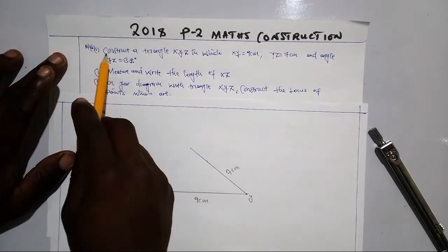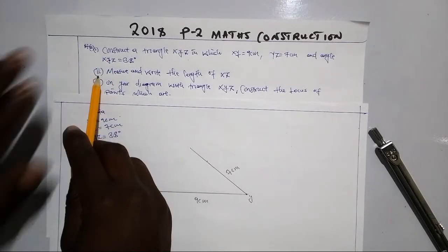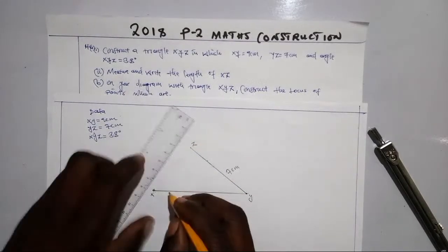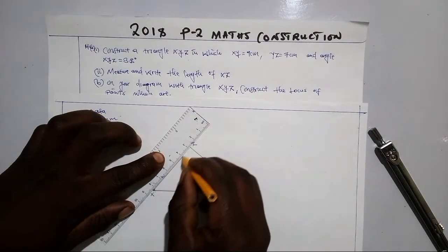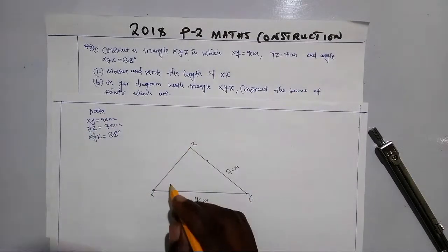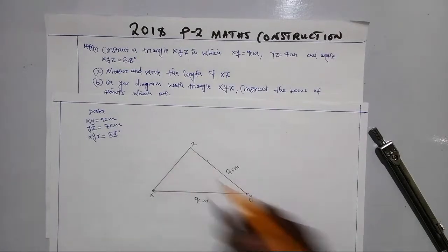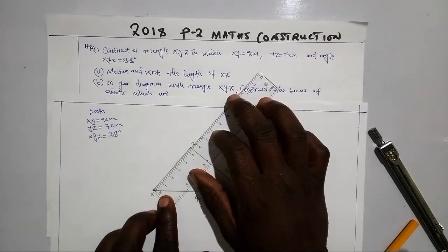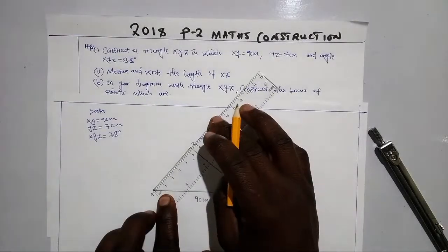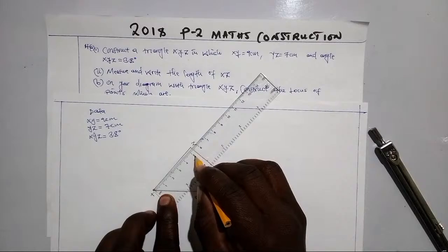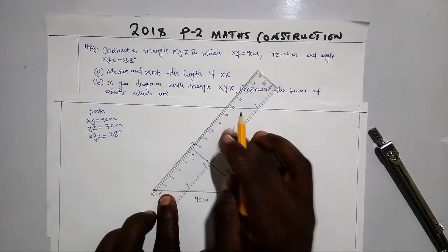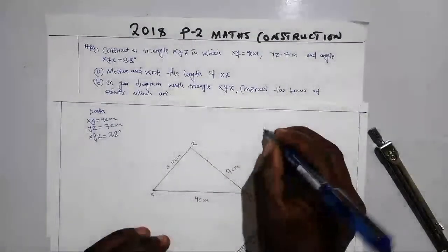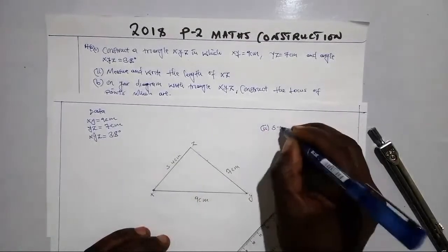For question part (a), we are done. Now let's move to measuring the length of XZ. Point Z is here, so join this line to where YZ ended. Come with your ruler, stand at X, and measure to Z. I found that XZ is 5.4 centimeters.